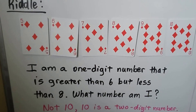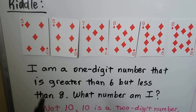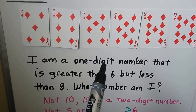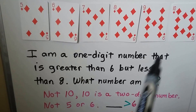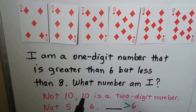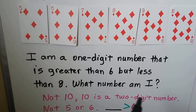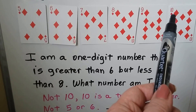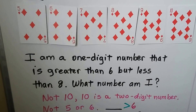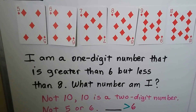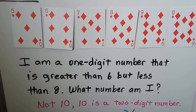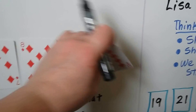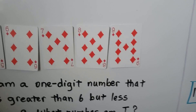We look at the clues it's giving us. It says it's a one-digit number, so we know it's not the 10, because 10 is a two-digit number — it has a 1 in the tens place and a 0 in the ones place. So it's not 10, and we can take that card away.